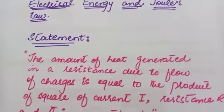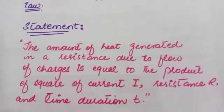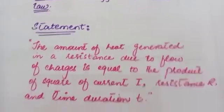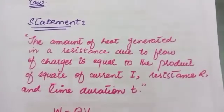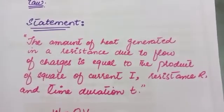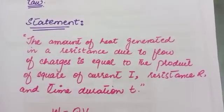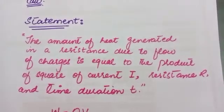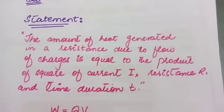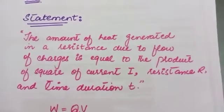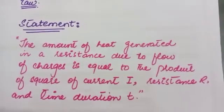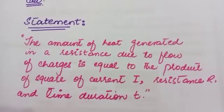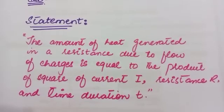The next topic is electrical energy and Joule's Law. Joule's Law can be stated as: the amount of heat generated in a resistance due to the flow of charges is equal to the product of the square of current I, resistance R, and time duration t.